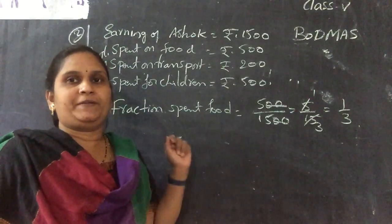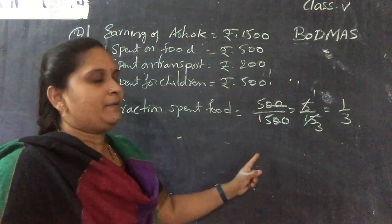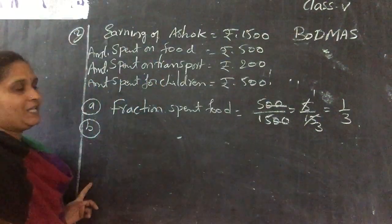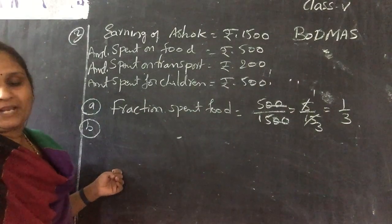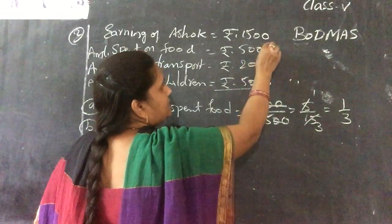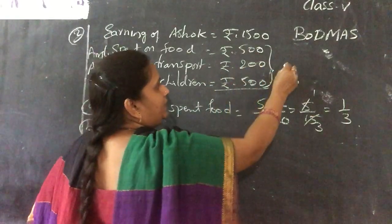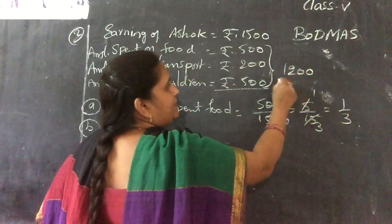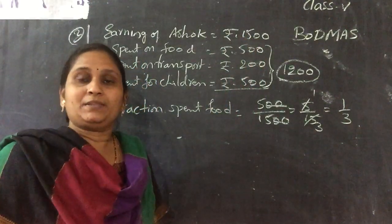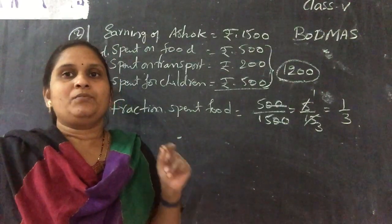Fraction saved: total spent = 500+200+500 = 1200. Remaining = 1500−1200 = 300. Fraction on savings = 300/1500 = 1/5.